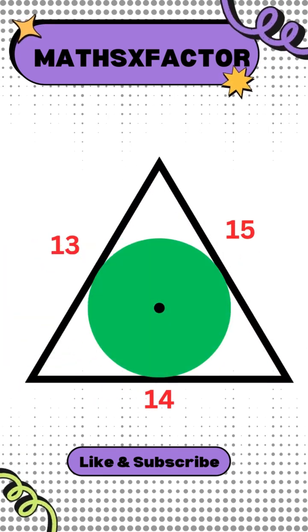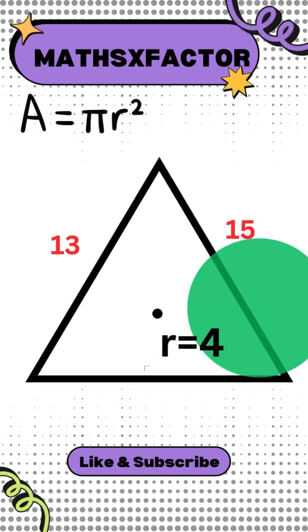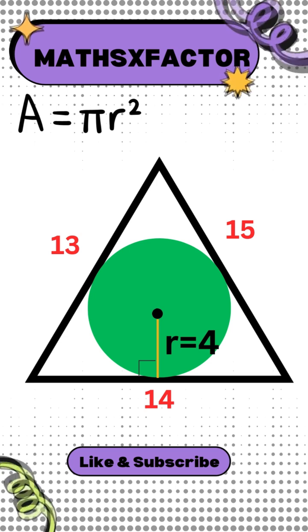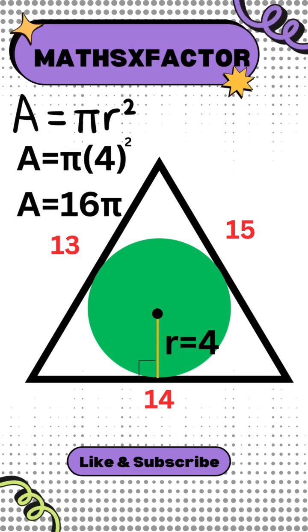Now can you find the area of this circle? Yes, I can. We know that the area of the circle is pi times R squared. By putting values we get the area of this circle is 16 times pi.